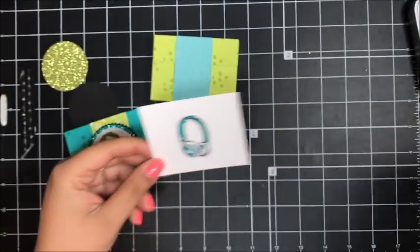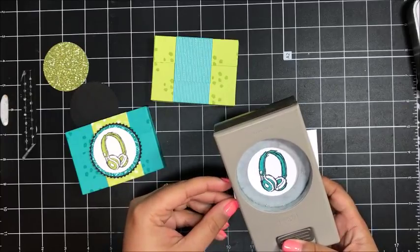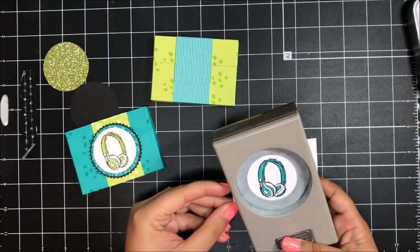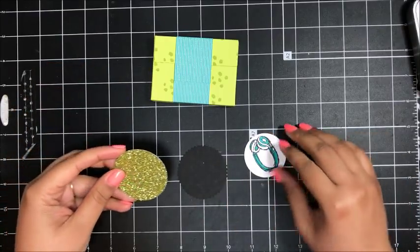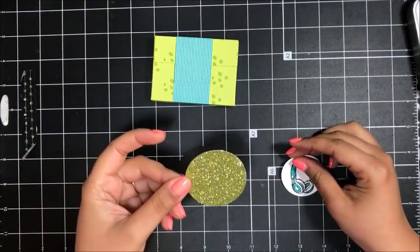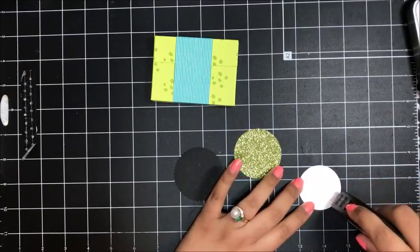I'm going to bring in my one and three quarter inch circle punch and punch these out. Now we can layer up these pieces. What I did is I punched out using the two inch circle punch some of that Myths and Magic glimmer paper.